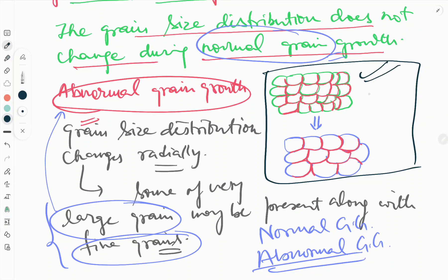Here is an example of normal grain growth. When the average grain size increases for any metallic system — suppose this grain size is increasing — it will increase in size and collide with neighboring grains. Whenever the average grain size increases, the grain boundary area per unit volume of the metal decreases, with a corresponding decrease in grain boundary energy per unit volume.